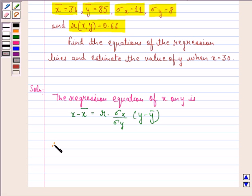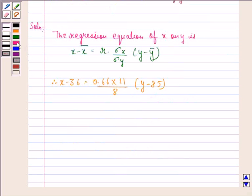Therefore, x minus 36 is equal to 0.66 into 11 by 8 multiplied by y minus 85. This implies that x is equal to 36 plus 0.9075y minus 77.35.